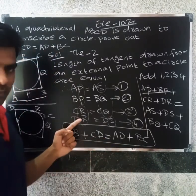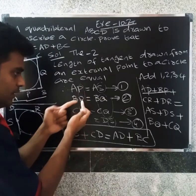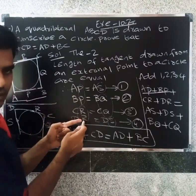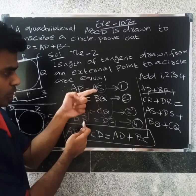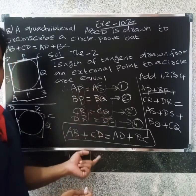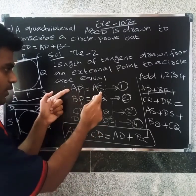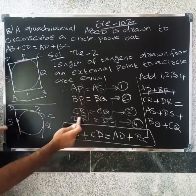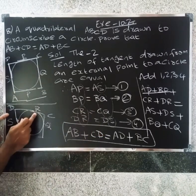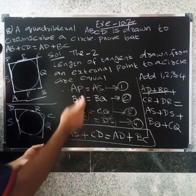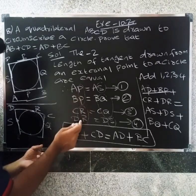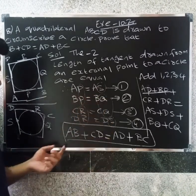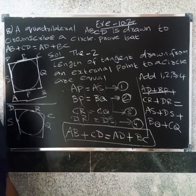This is how we prove it. AB + CD equals AD + BC. The key concept is using the fact that tangents from an external point are equal: AP = AS, BP = BQ, CR = CQ, and DR = DS. Thank you.